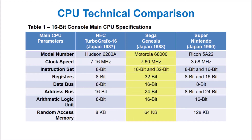The Sega Genesis has a Motorola 68000 CPU, which supports both 16 and 32-bit operations. The Super Nintendo has a 16-bit Ricoh 5A22 CPU, which supports both 8 and 16-bit operations.